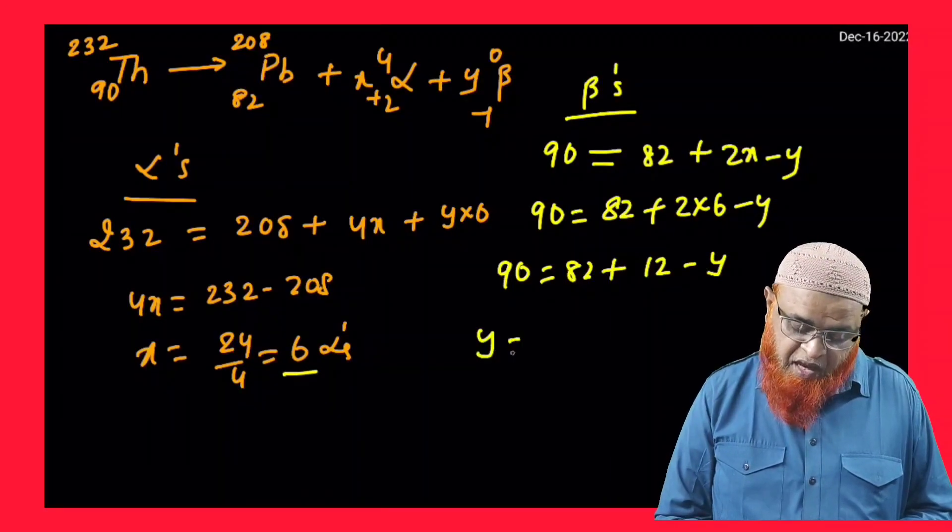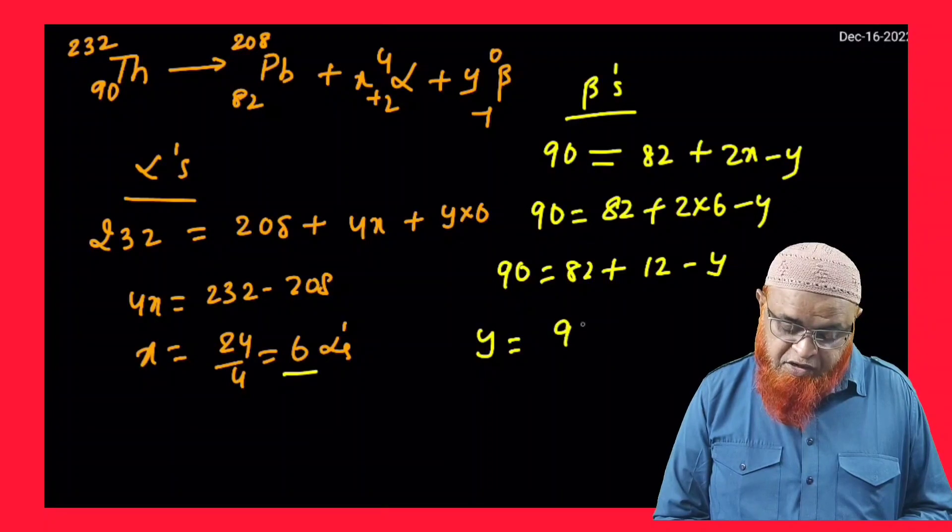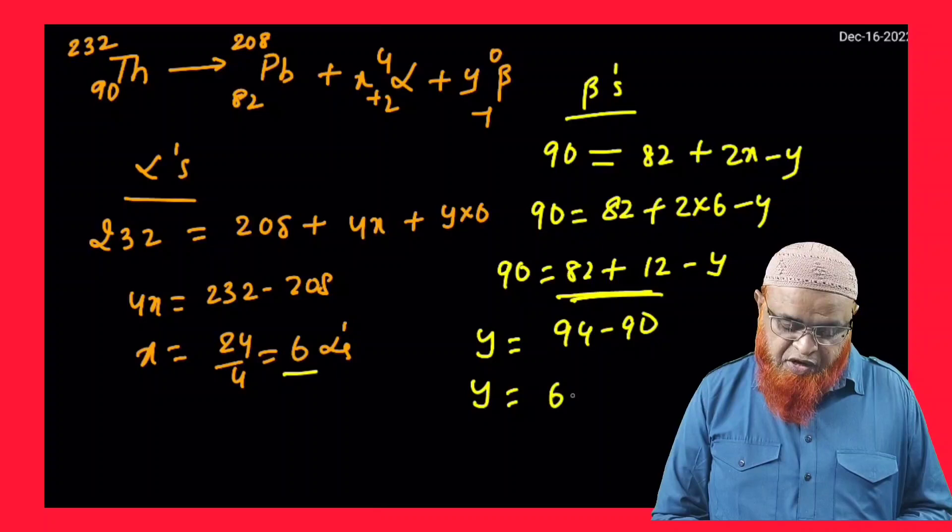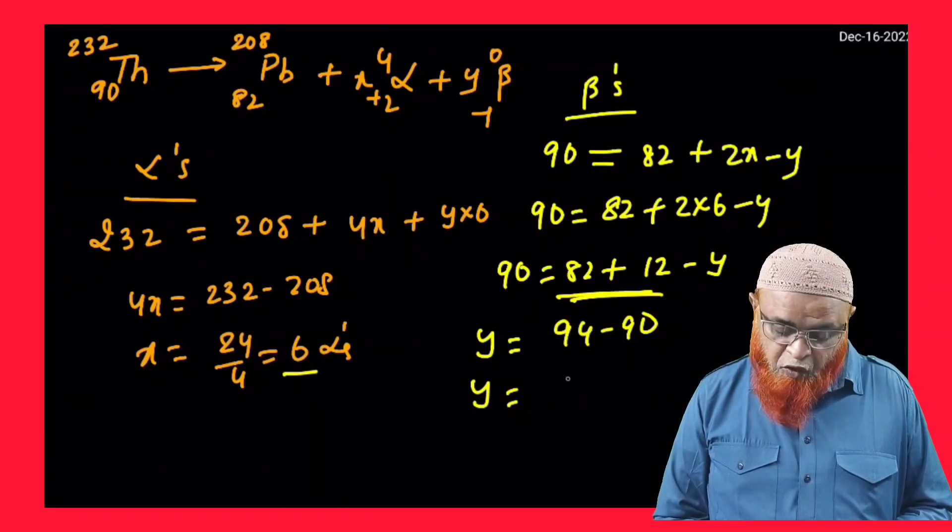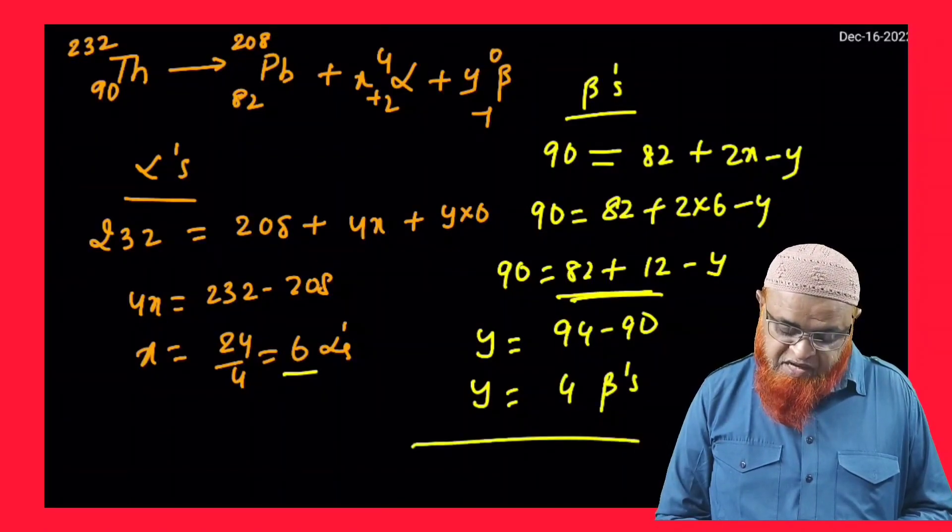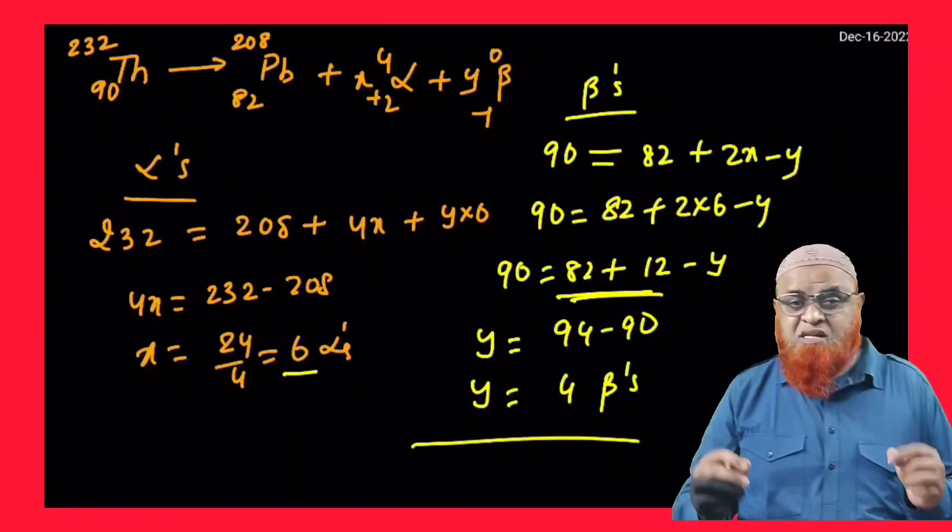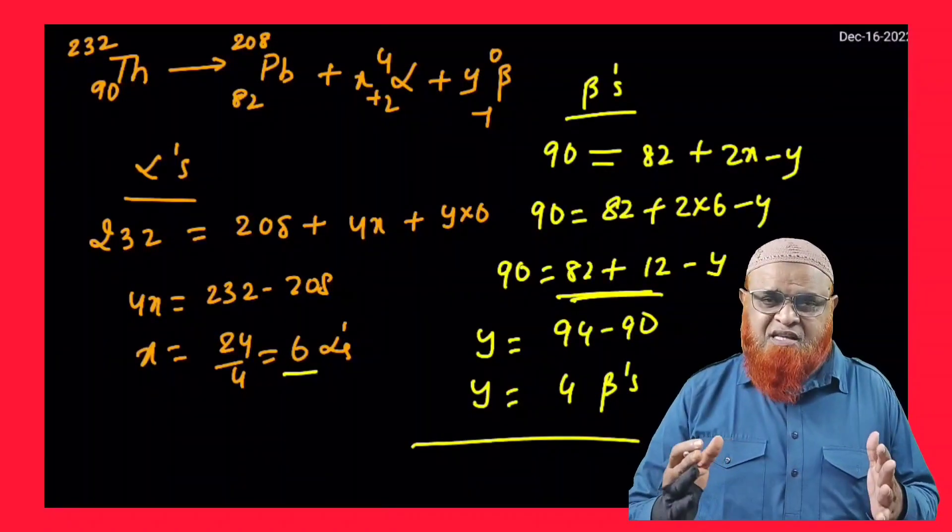So you can find out y is going to be 94 − 90, because this is going to be 94 − 90, which is y = 4. So we're getting 4 betas. Like this, this method is an accurate method where you can solve the number of alpha and beta particles. Thank you very much.